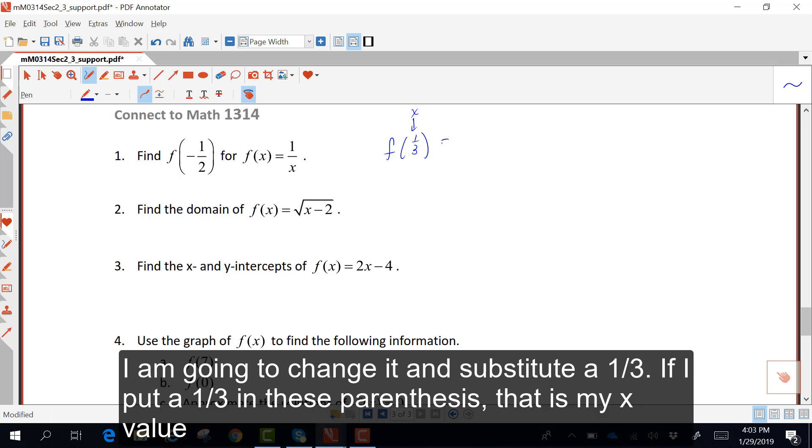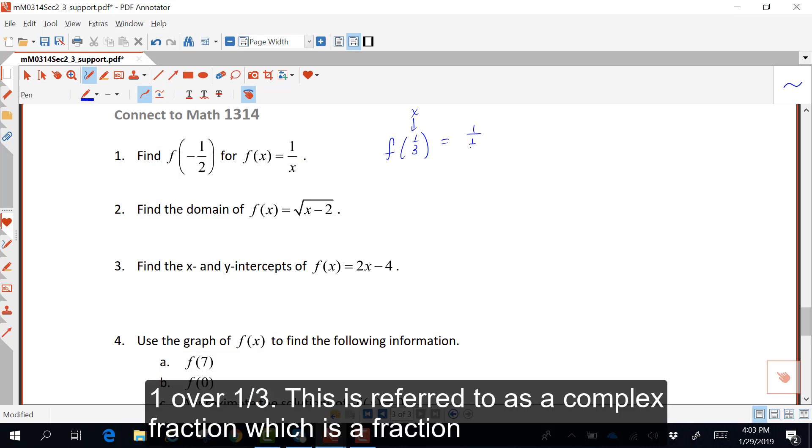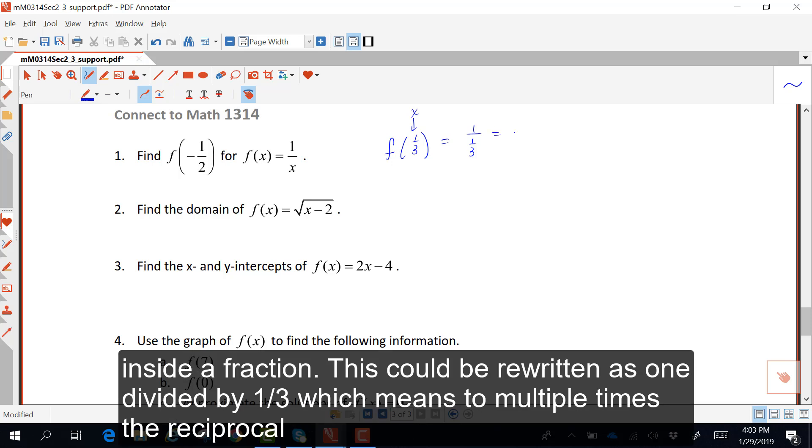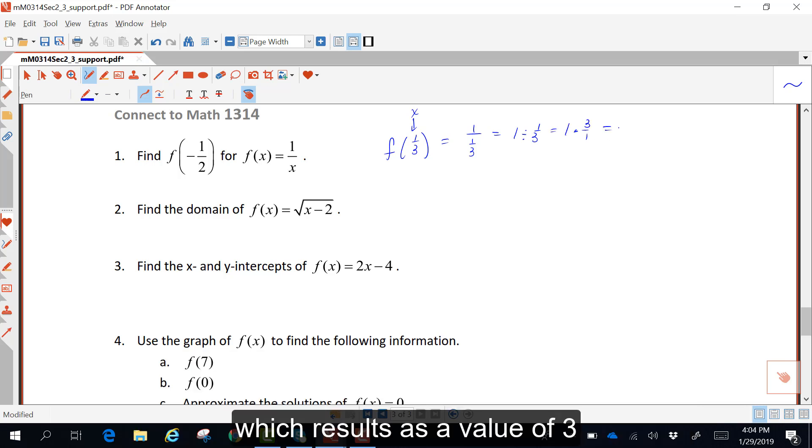So, 1 over x will become 1 over 1/3. This is referred to as a complex fraction, which is a fraction inside a fraction. This could be rewritten as 1 divided by 1/3, which means to multiply times the reciprocal, which results as a value of 3.